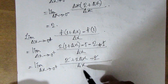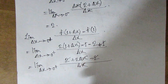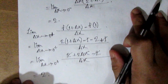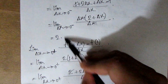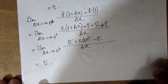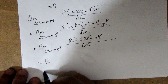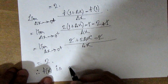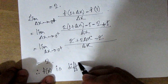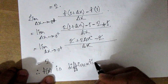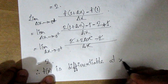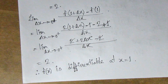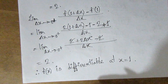So 2 is equal to 2. So this is the same value — both sides equal 2. Function f(x) is differentiable at x equal to 1. So this is the math — the differentiability math is easy.